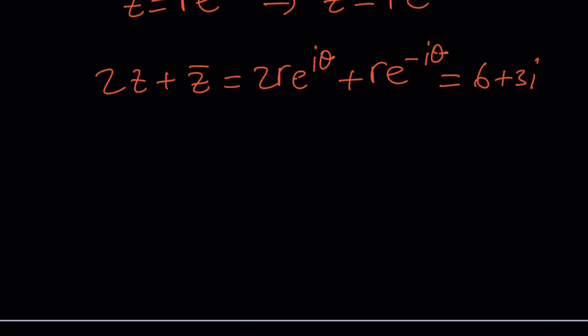So you can kind of write this as 2r e to the i theta plus r divided by e to the i theta. And then if you call e to the i theta something like t, then you could go ahead and come up with a quadratic equation. The problem with that quadratic equation is there's going to be two variables. So we're going to get 2rt plus r over t, which can be written as 2rt squared.